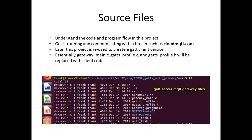Here are the project source files. Source files are always found under the main subdirectory. Understand this particular code and program flow. Get it running and communicating with a broker of your choice. This project is reused to create the GATT client version. Essentially, gatewaymain.c, gatsprofile.c, and gatsprofile.h are replaced with client code.